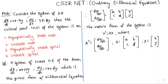Consider the system of differential equations: dx/dt = 2x - 7y, dy/dt = 3x - 8y. Then the critical point (0, 0) of the system is: first option, asymptotically stable node; second option, unstable node; third option, asymptotically stable spiral; fourth option, unstable spiral.